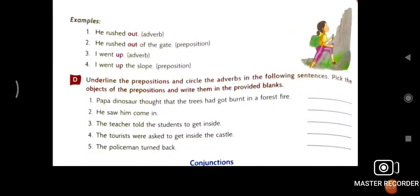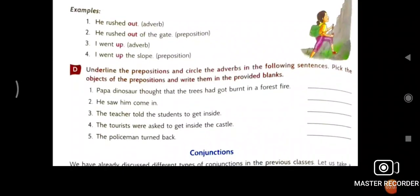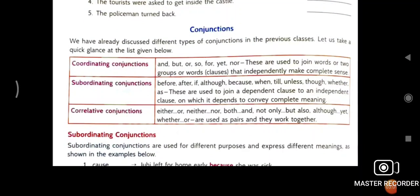So find, you have to understand. First, he rushed out, it's adverb. He rushed out of the gate. Then out, what is preposition? That you have to understand. In the exercise D, you have to underline the preposition and circle the adverbs. Now after, conjunction.